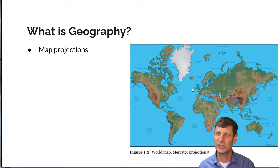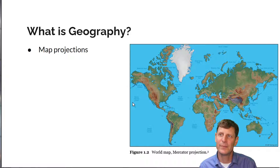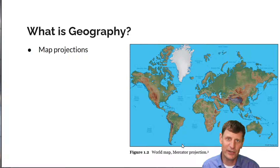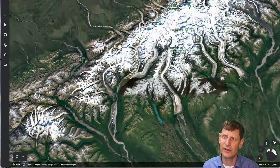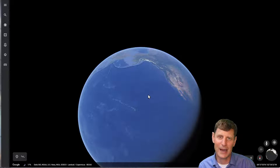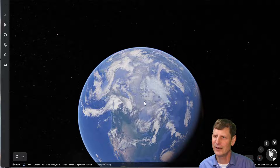The Mercator projection is popular because it maintains north and south everywhere on the map — north is always directly to the top, south always to the bottom, and east and west are side to side. The challenge is that it distorts the areas near the north and south poles. We don't notice it as much in the southern hemisphere because Antarctica is not included and the southern land masses don't extend as far south of the equator as the northern land masses do north of the equator.